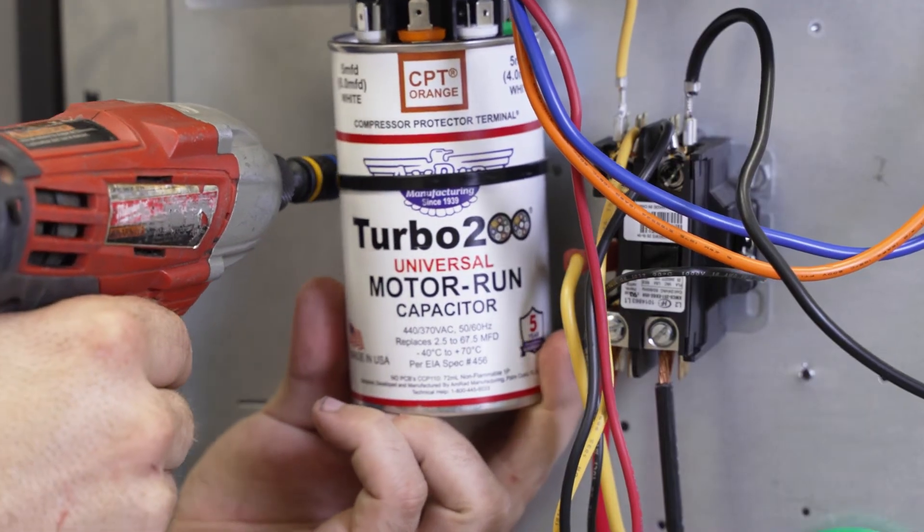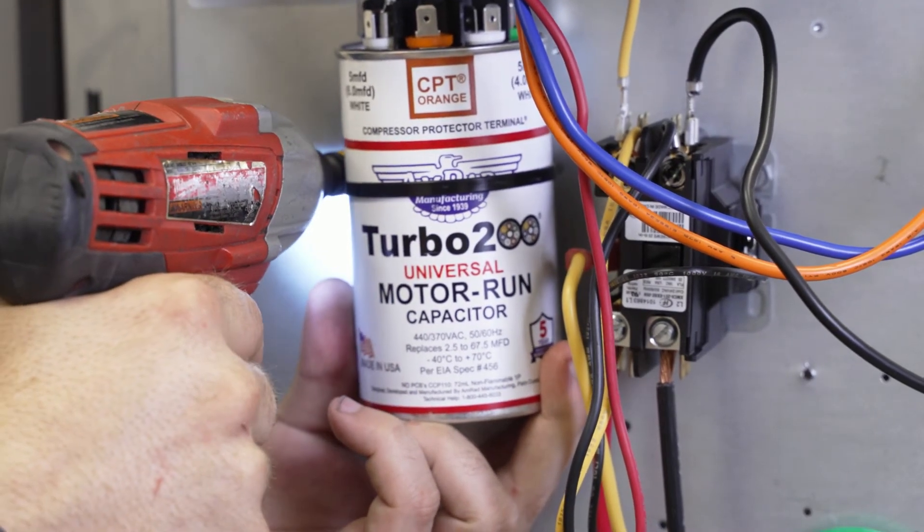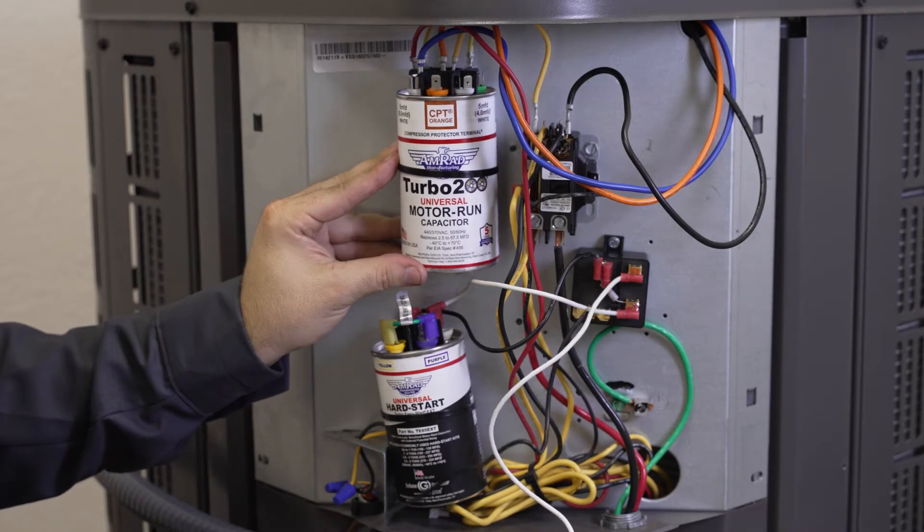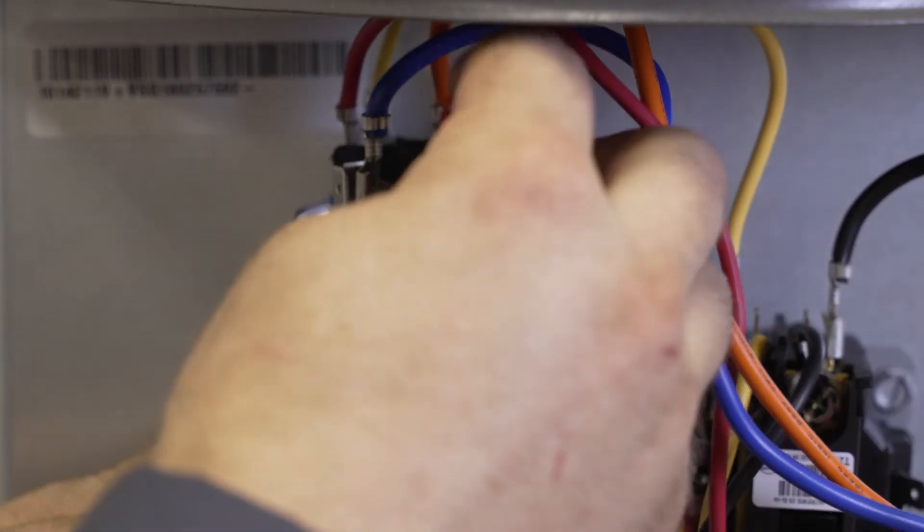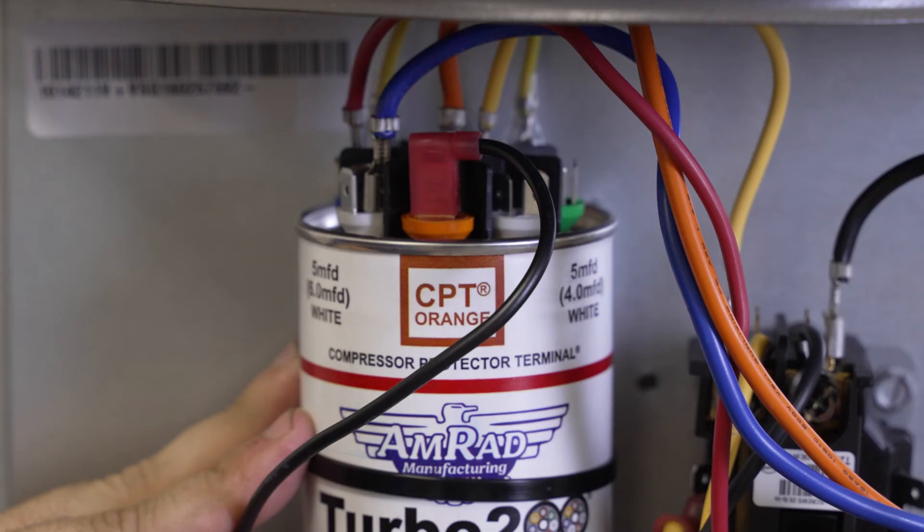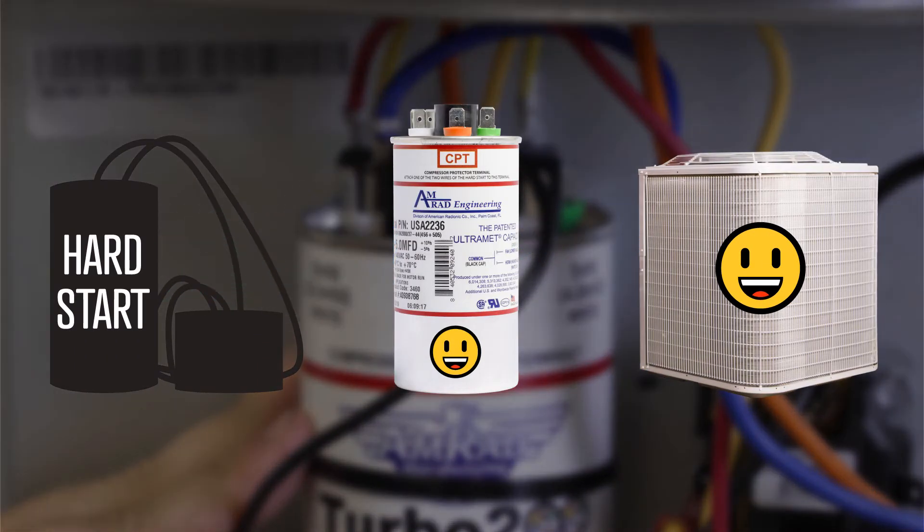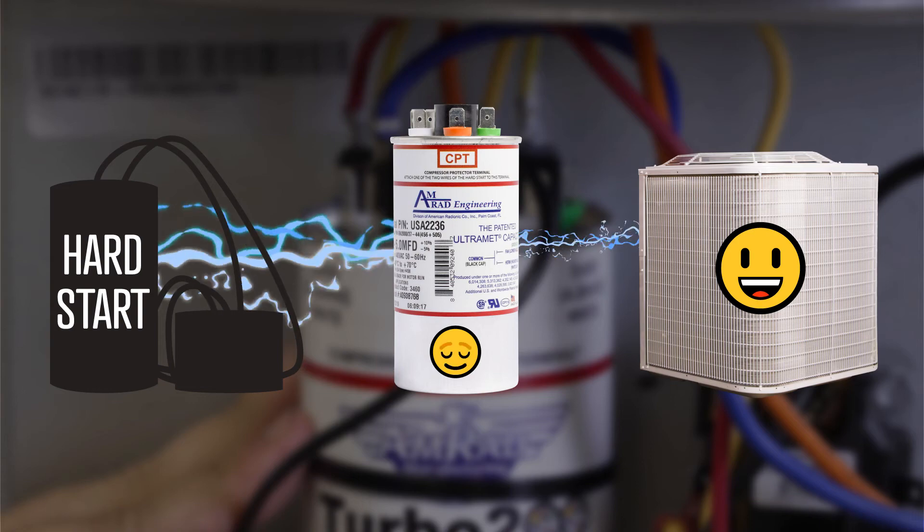Mount the capacitor upright in the unit. If you were also attaching a hard start to this capacitor, you'd attach one wire to the compressor protector terminal or CPT for short. This terminal ensures that the hard start cannot keep kicking the compressor on if the motor run capacitor fails, thus preventing damage and possible compressor failure.